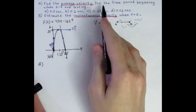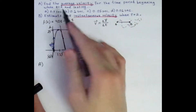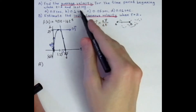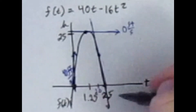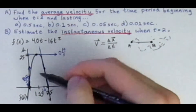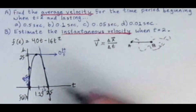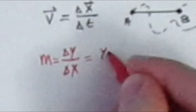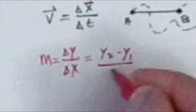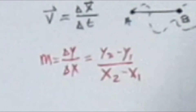For Part A, we find the average velocity from the time period beginning when t equals 2 and lasting 0.5 seconds. That means we start at 2 seconds and go 0.5 seconds, so t2 would be 2.5 seconds. We have the change of y and the change of x, and recall that slope is delta y over delta x, which is y2 minus y1 over x2 minus x1.